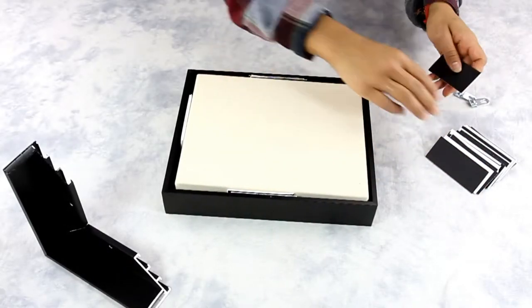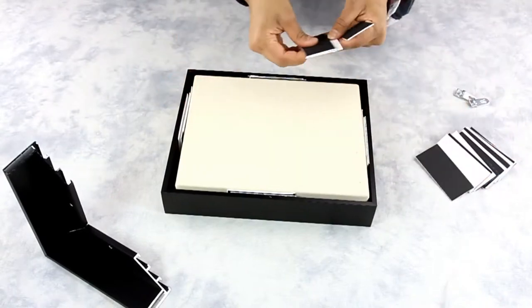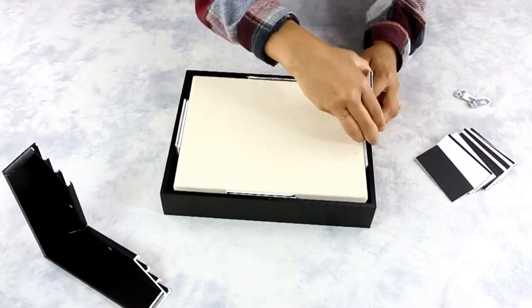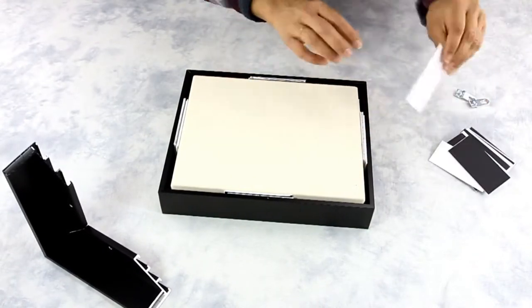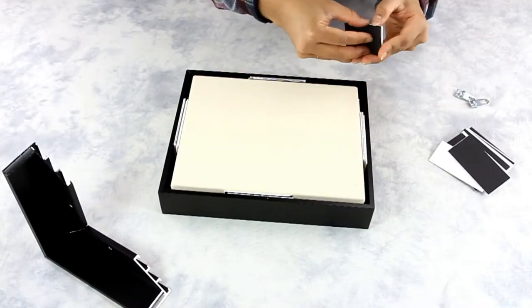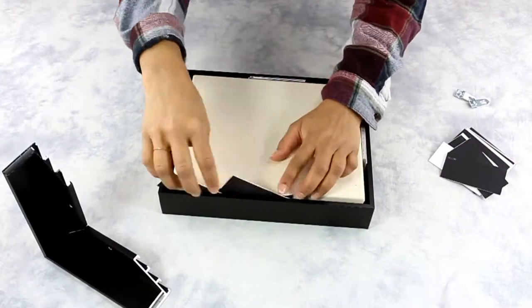For L-shape floater frames, use the spacers to create even gaps around the frame. The L-shape floater frame can be used with or without gaps. So roughly there will be three-eighths to half inch space all around the artwork.